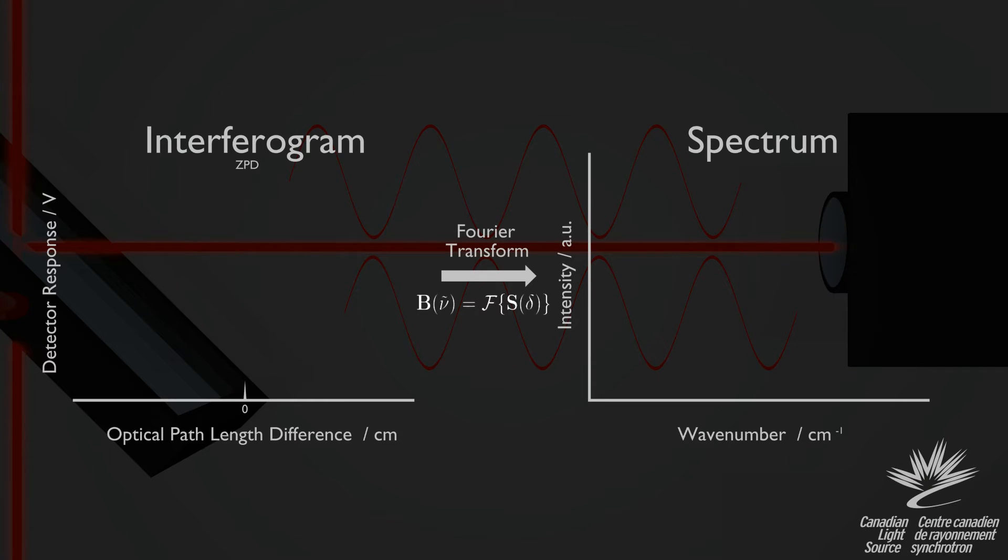The result is an interferogram, a plot comparing the intensity of the light at the detector as a function of the distance in path length taken by the two beam components. For a single wavelength, this looks like a sinusoid whose wavelength is equal to the wavelength of the light being interfered. Taking the Fourier transform of this wave, we measure one spike at the wave number associated with the incident light.